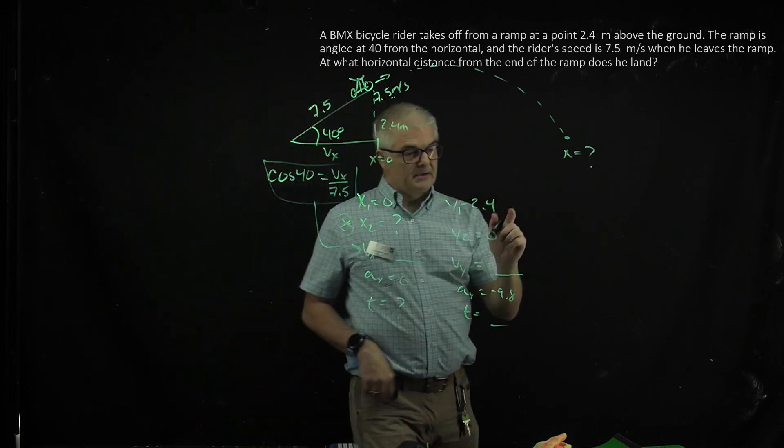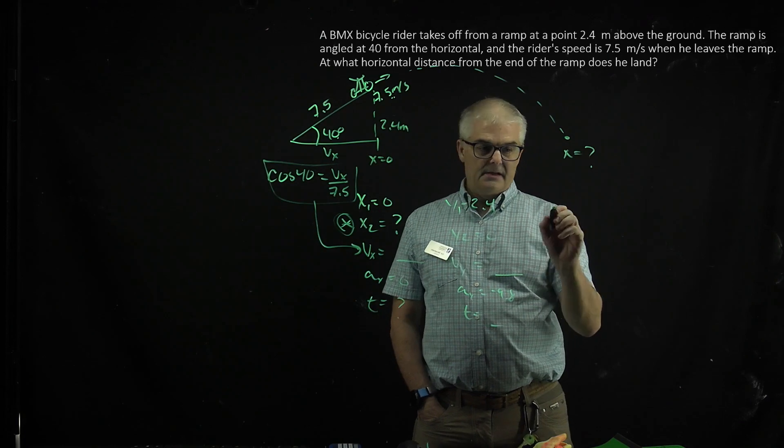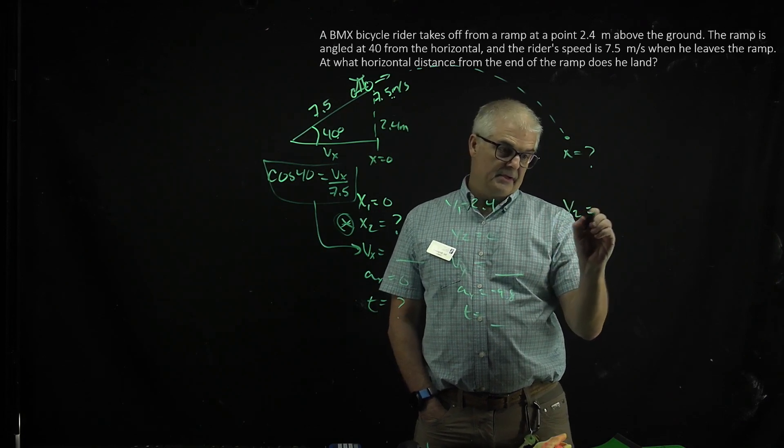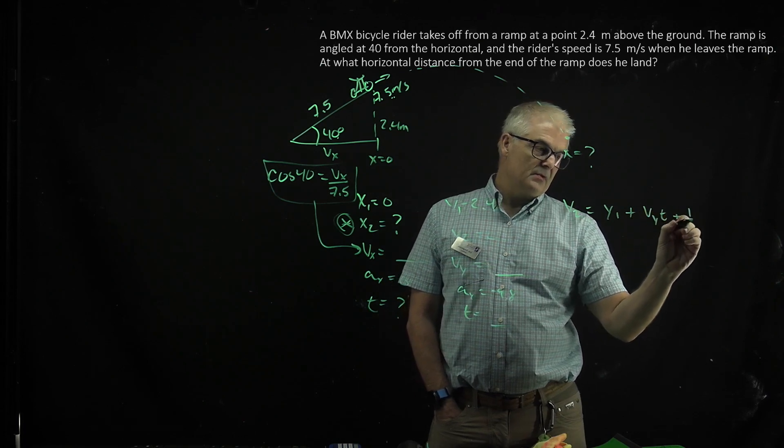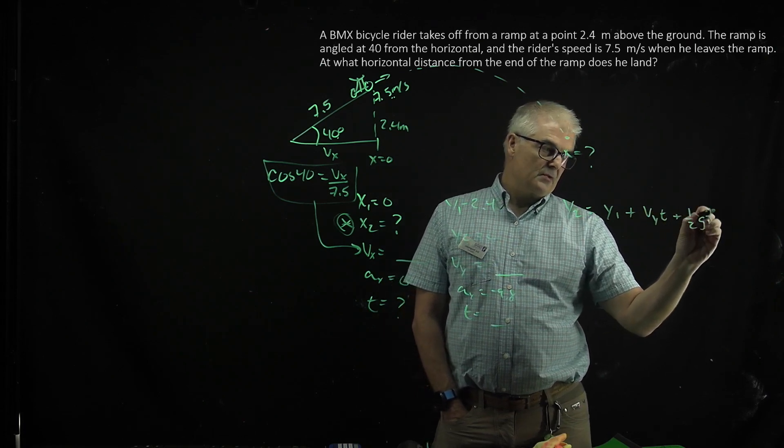Then you're going to plug this in, and you're going to say, y2 equals y1 plus vyt plus 1 half gt squared.